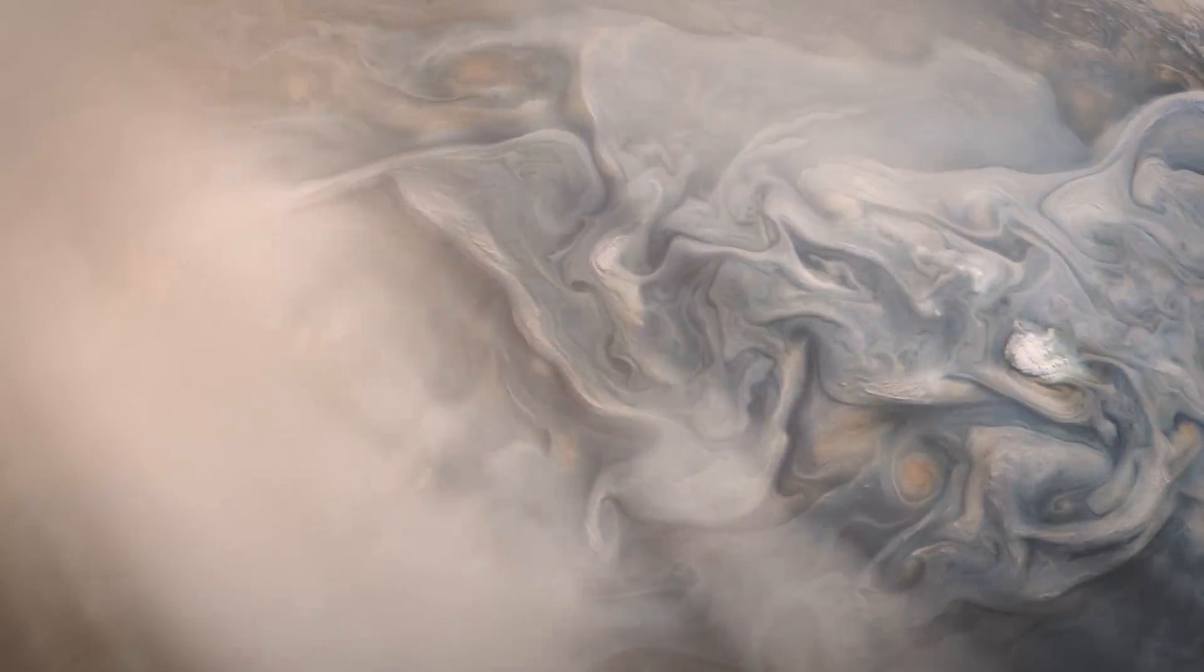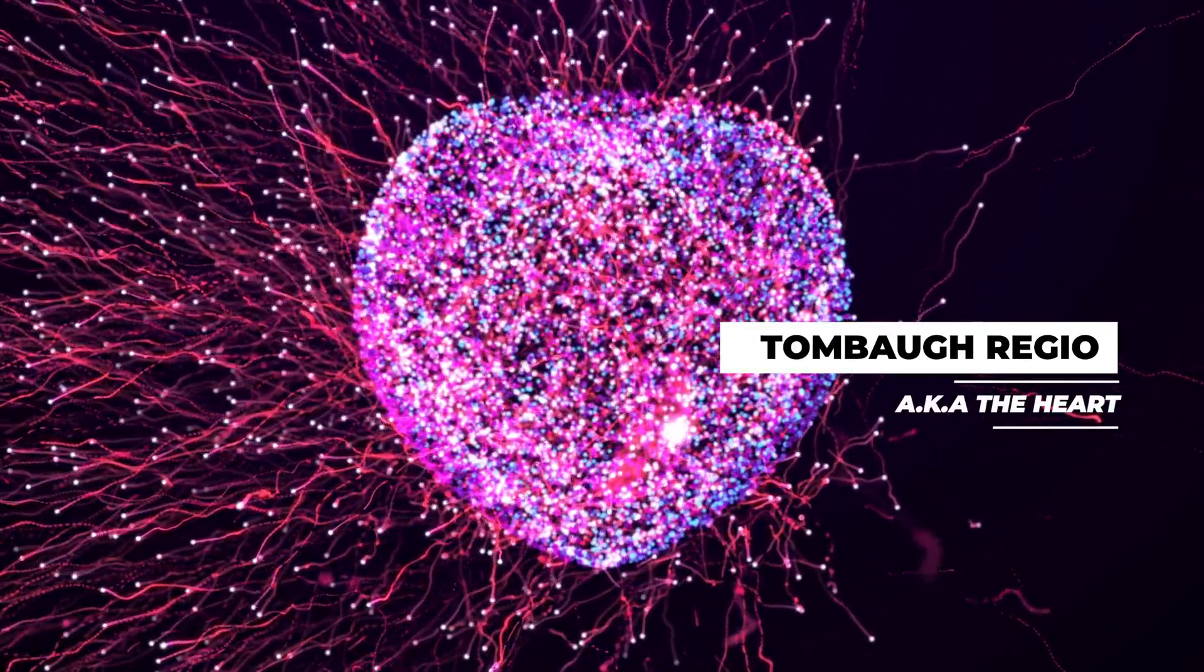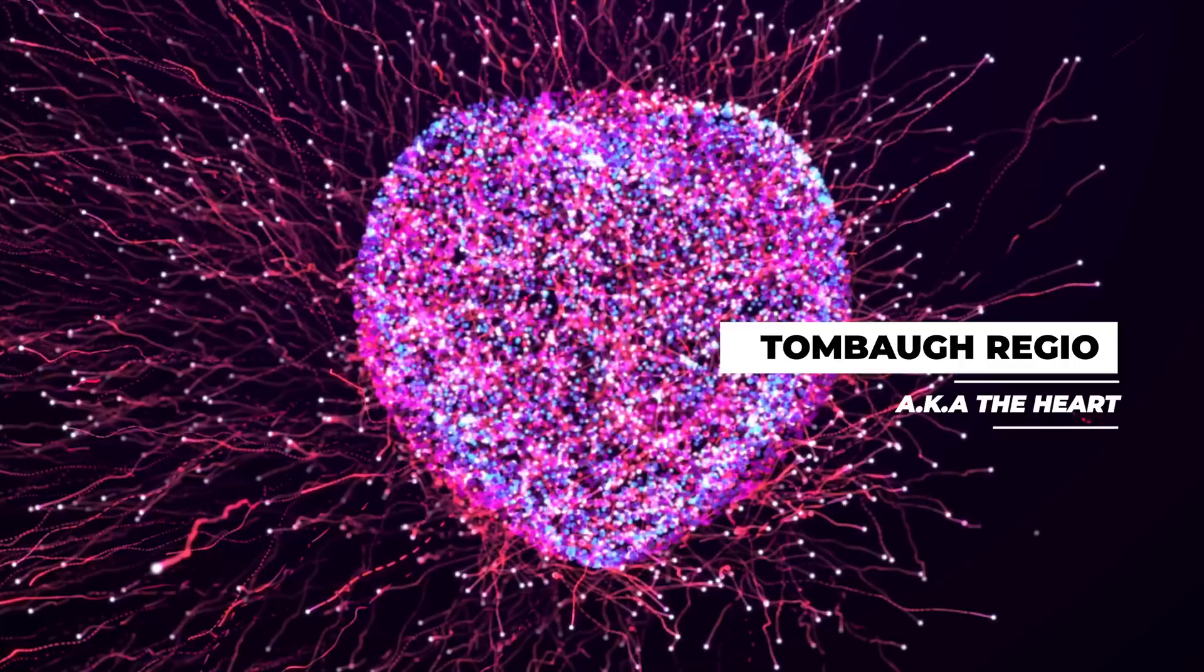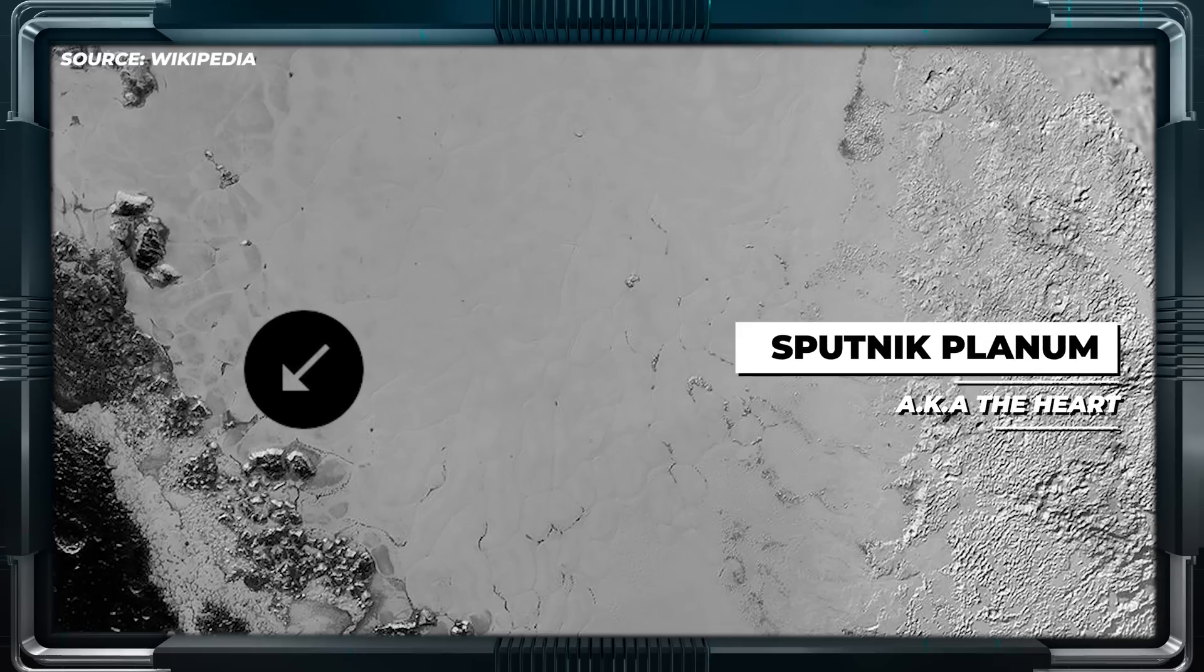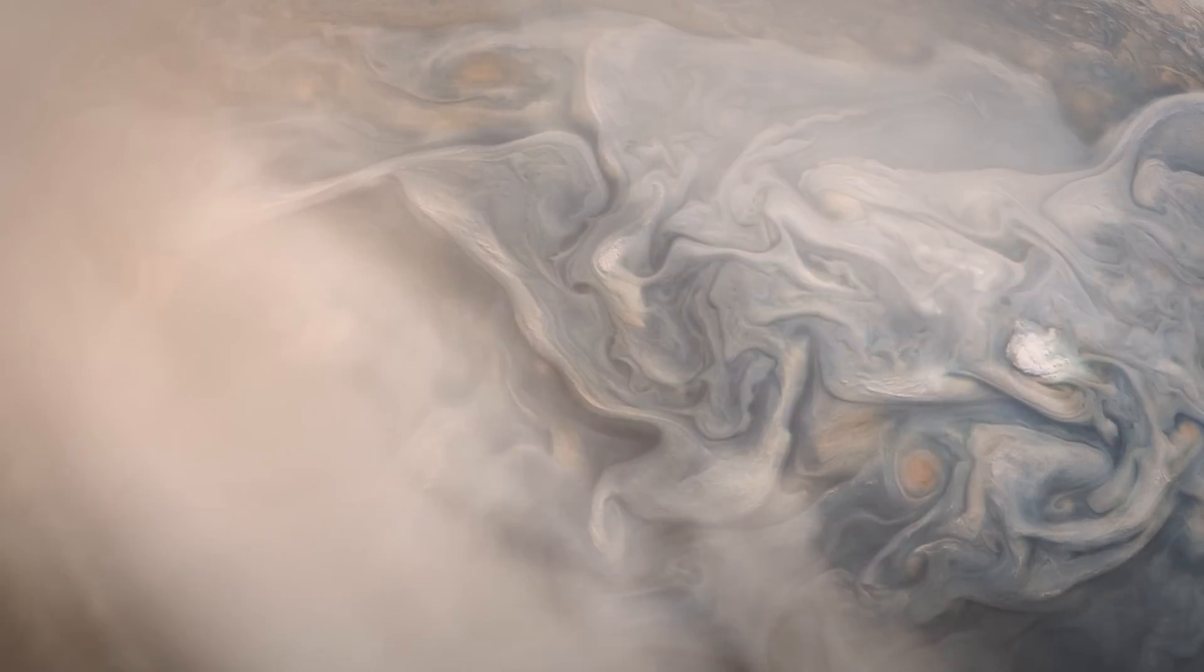The Tombaugh Regio, also known as the Heart, is a significant feature captured in the images, with the left side containing smooth carbon monoxide ice. This is known as the Sputnik Planum, which plays a central role in regulating the orbit and atmospheric conditions of the dwarf planet.